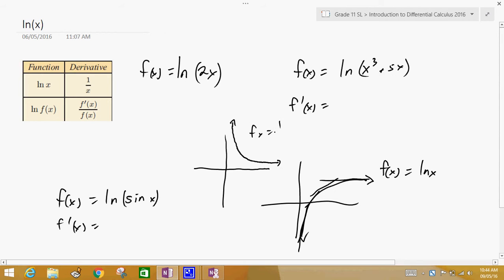f(x) = 1/x for x greater than or equal to zero. Okay, so that's just some background information on the function ln(x) and its derivative.